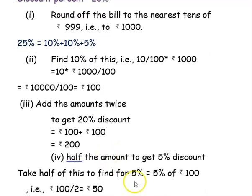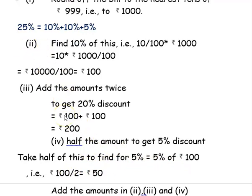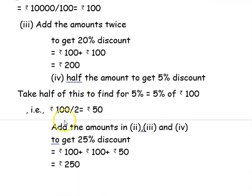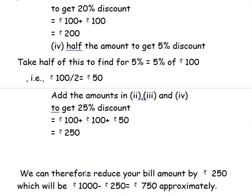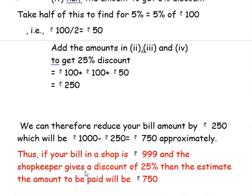5 percent is half of rupees 100, so 100 divided by 2 equals rupees 50. For 25 percent total, add all amounts: rupees 100 plus rupees 100 plus rupees 50 equals rupees 250. This discount amount is then reduced from the bill.